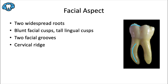The facial cusps are generally pretty blunt, and you can see the lingual cusps because they're slightly longer or taller, although the mesiofacial cusp is the largest one by overall size. This is the only tooth in the mouth that has two grooves on its facial surface: a facial groove and a distofacial groove. There's also often a facial pit right at the end of that facial groove.